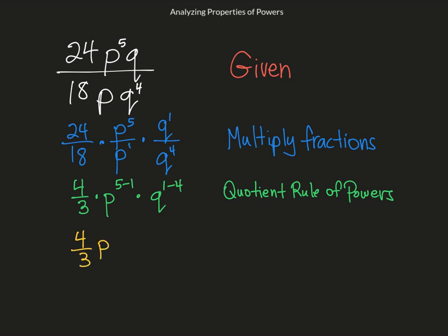And again, most likely they're going to want you to write your answer with positive exponents. Before I do that, that is simplifying powers. So I will write my final answer as four p to the fourth over three q cubed, and that is the negative exponent rule.